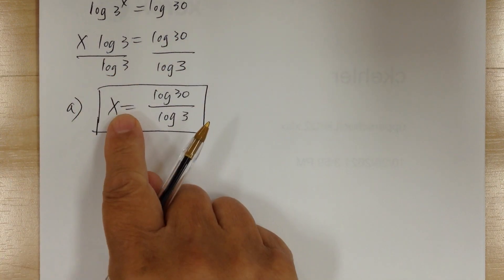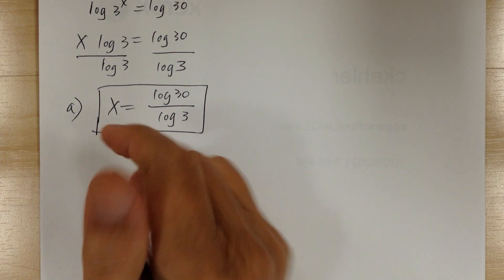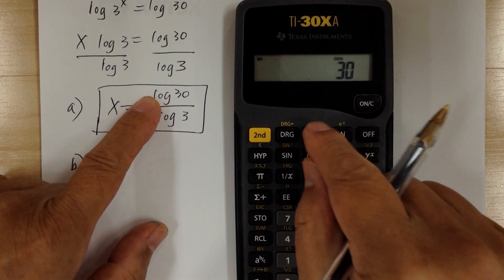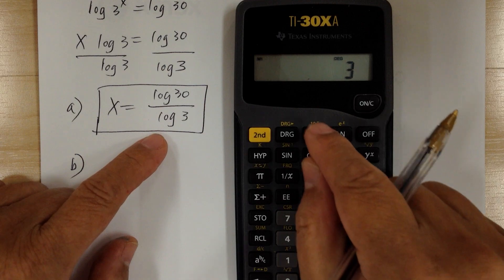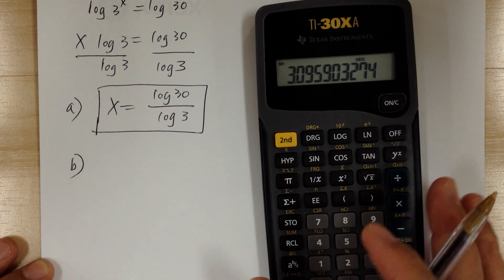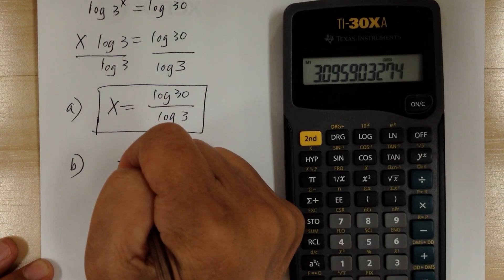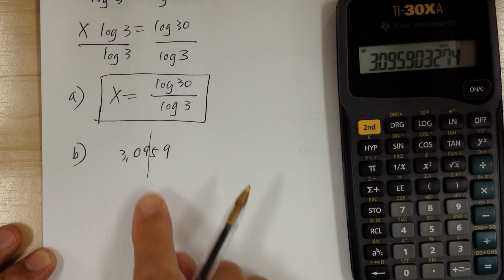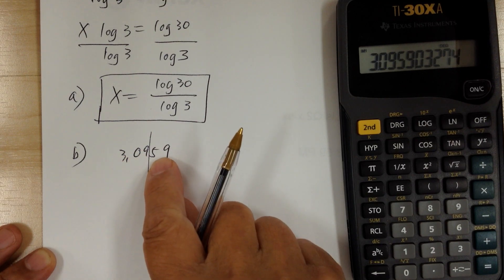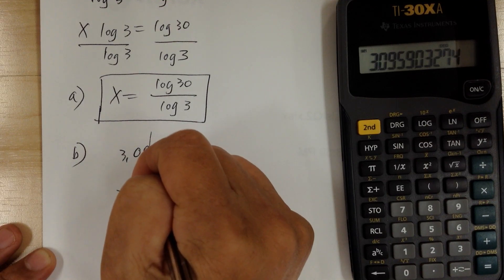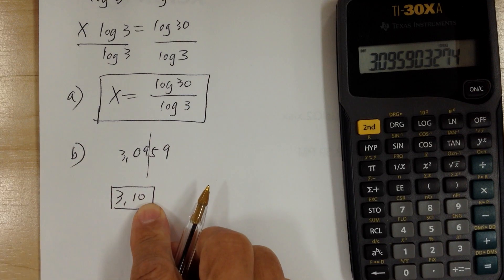Part B is when you actually use the calculator. You're going to enter 30 log, divided by 3 log, equal — and you want three significant digits. You get 3.0959, so rounded to three digits that becomes 3.10, because the 9 rounds up the 0 to make it 10.